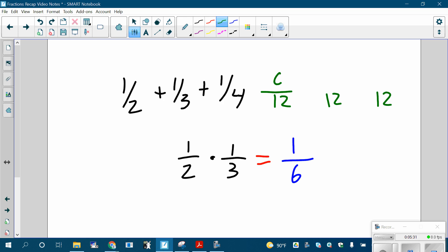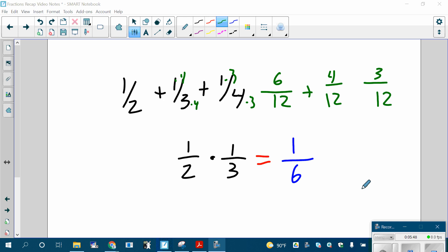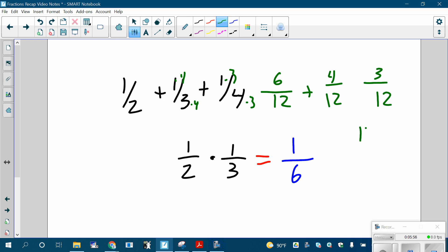1 half is the same as 6 twelfths. If you couldn't figure that out, what do you multiply 2 by to get 12? 6. So multiply the top by 6. 1 third times 4 times 4 is 4 twelfths. 1 quarter times 3 times 3 is 3 twelfths. Once you get a common denominator, how do you add fractions? You just add the tops. 6 twelfths plus 4 twelfths plus 3 twelfths is 13 twelfths. So adding and subtracting, you need to get a common denominator. Multiplying or dividing is more straightforward. No need for a common denominator.